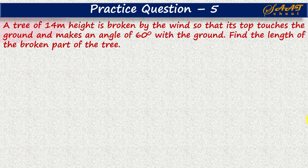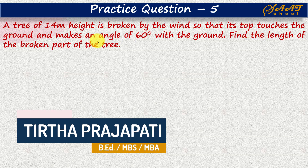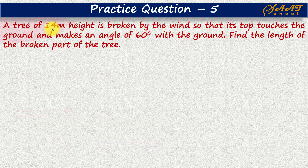Here is practice question 5. A tree of 14 meter height is broken by the wind so that its top touches the ground and makes an angle of 60 degrees with the ground. The height of the tree given is 14 meter, and this is the original height of the tree before it was broken.